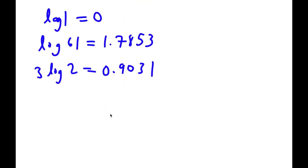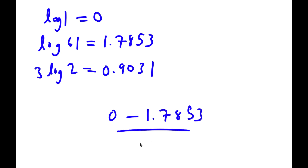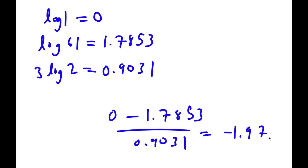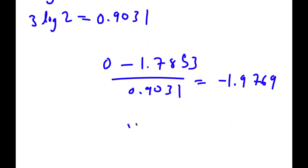So now I have 0 minus 1.7853 over 0.9031, and this is equal to negative 1.9769. So x is equal to negative 1.9769.